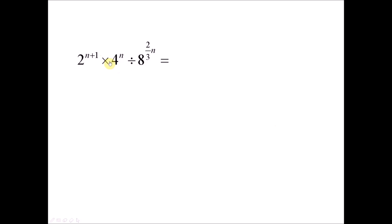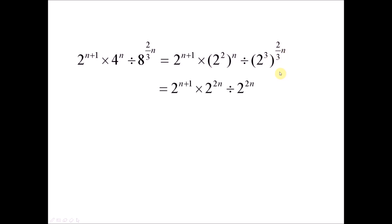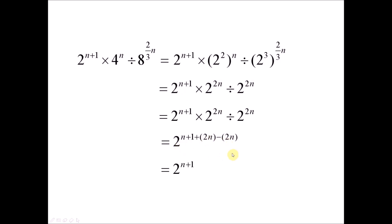Now we simplify expressions with different base numbers. Since they have different bases, you cannot use the formula straight away — you need to convert 4 and 8 so they have the same base as 2. So 4 is 2 squared and 8 is 2 cubed. After converting, all terms have the same base. Remember to put brackets when you change the base. The bracket means multiply: 2 times n gives 2n. Using the addition formula: n plus 1 plus 2n for multiplication, then subtract 2n for division. So 2n minus 2n is 0, giving 2 to the power of n plus 1 as the final answer.